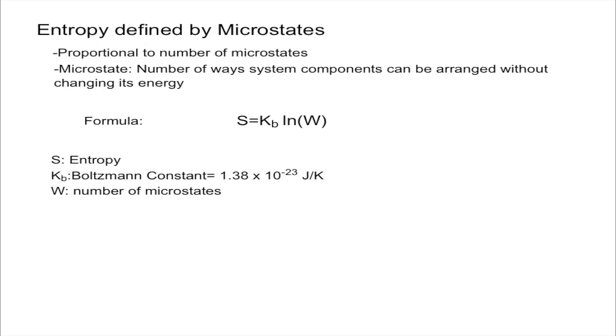The first thing to note is that entropy is proportional to the number of microstates, meaning that more microstates define a larger entropy. But what exactly is a microstate? A microstate is the number of ways system components can be arranged without changing its energy, so basically the way a system can be changed without involving a change in that energy.